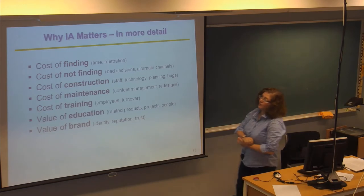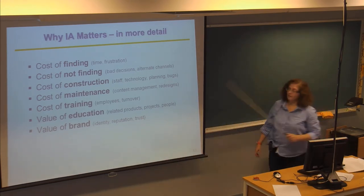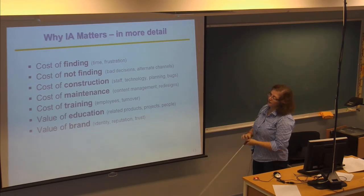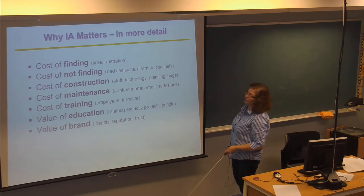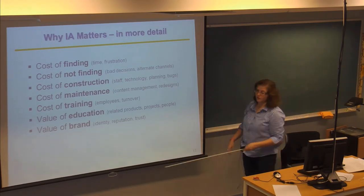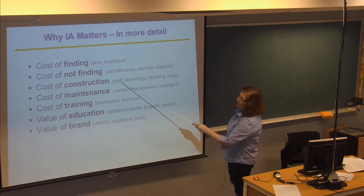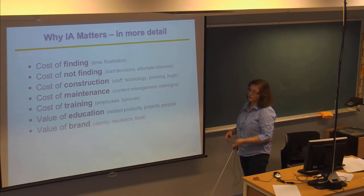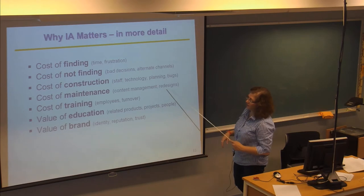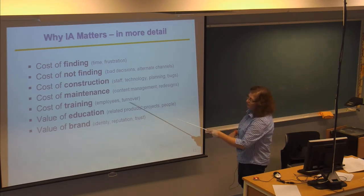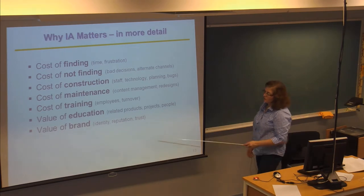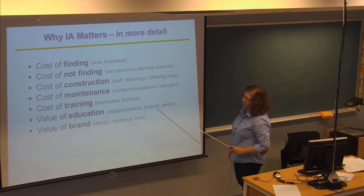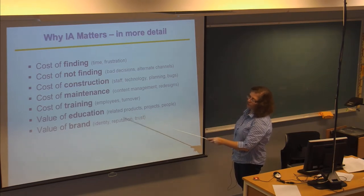So, some of the factors that go into this in more detail are that, the cost of finding something, how much time does it take? What is the frustration if you don't find it? Cost of not finding, bad decisions, alternate channels. Maybe people go off and try somebody else, try your competitor. Cost of construction, staff, technology, planning, and bugs. You have to be able to account for how much it costs to involve the resources to build the site and maintain it and the need to do redesigns. If the employees leave, is it intuitive how to use it?